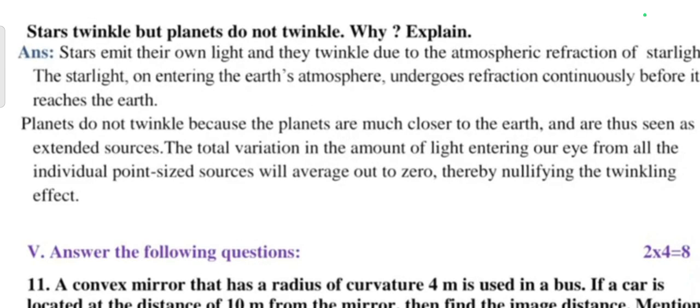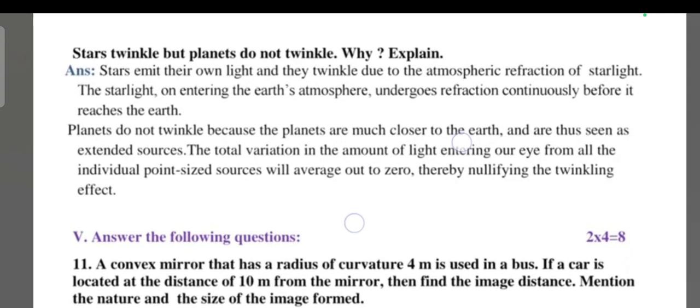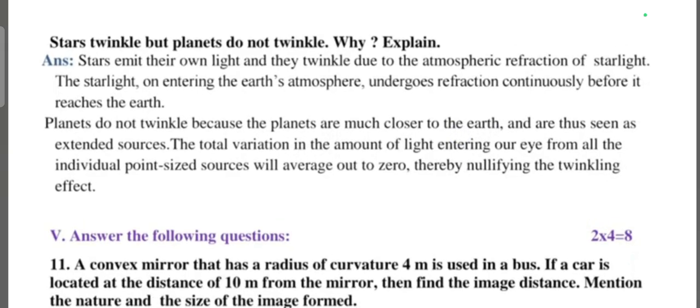Or question: stars twinkle but planets do not twinkle. Why? Explain. Stars emit their own light and they twinkle due to atmospheric refraction. The starlight entering the earth atmosphere undergoes the refraction continuously before it reaches to the earth. Planets do not twinkle because the planets are much closer to the earth and are thus seen as extended sources. The total variation in the amount of light entering our eye from all the individual point size sources will average out to zero, thereby nullifying the twinkling effect.